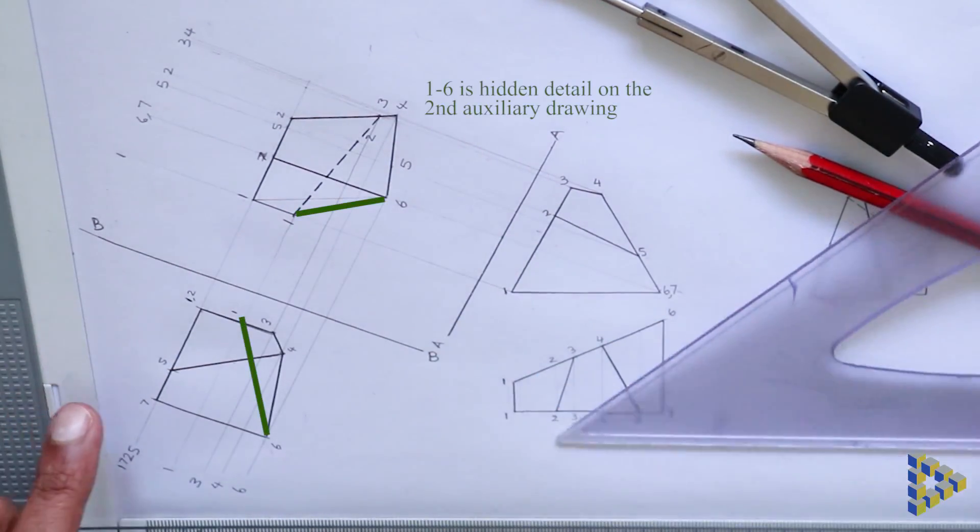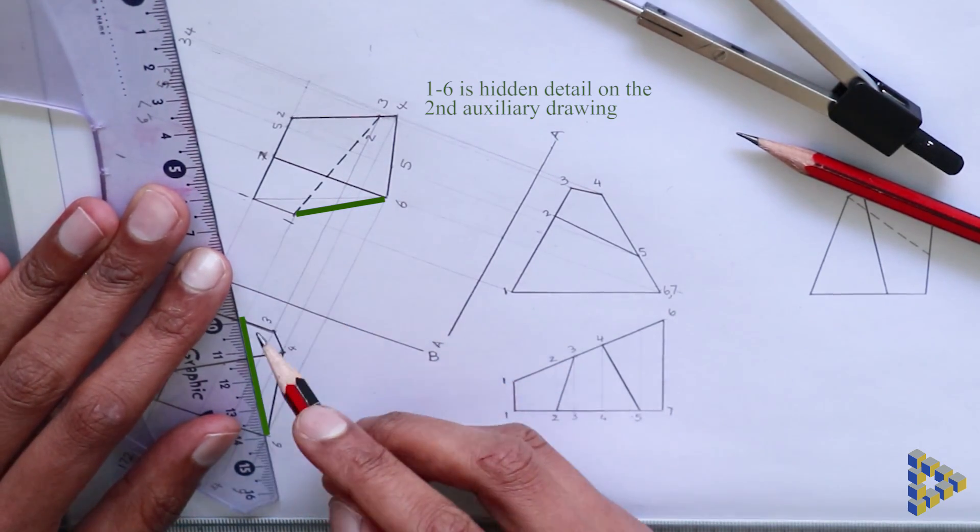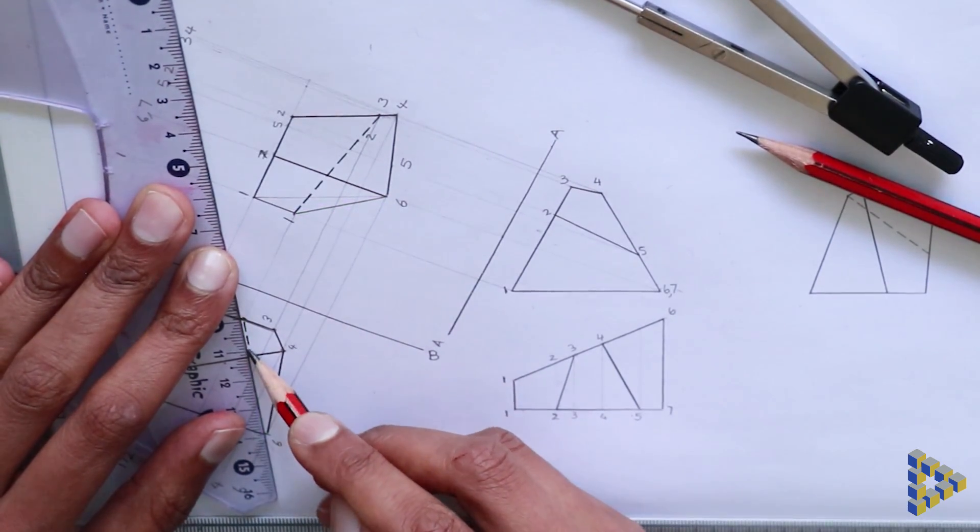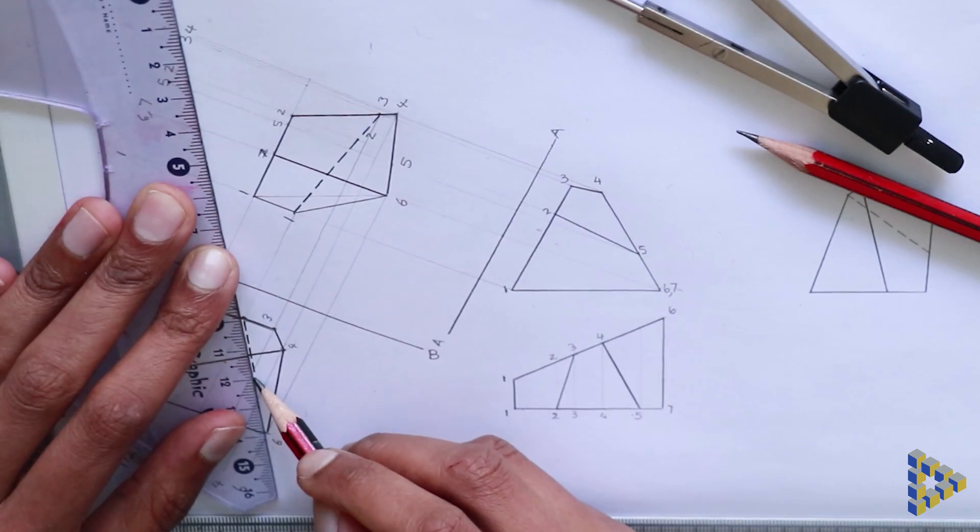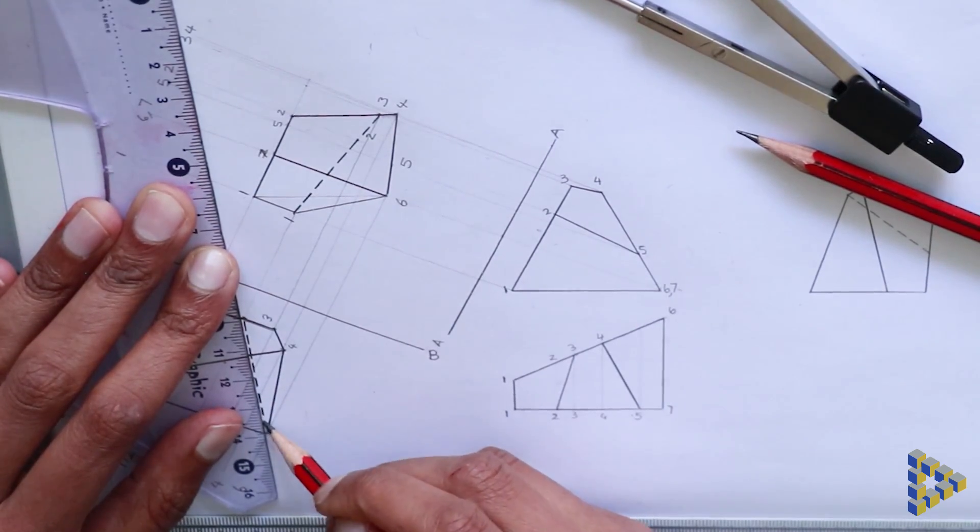Finally, a hidden detail line is drawn from one to six as the line one, six in the primary auxiliary drawing has been rotated behind and is now invisible.